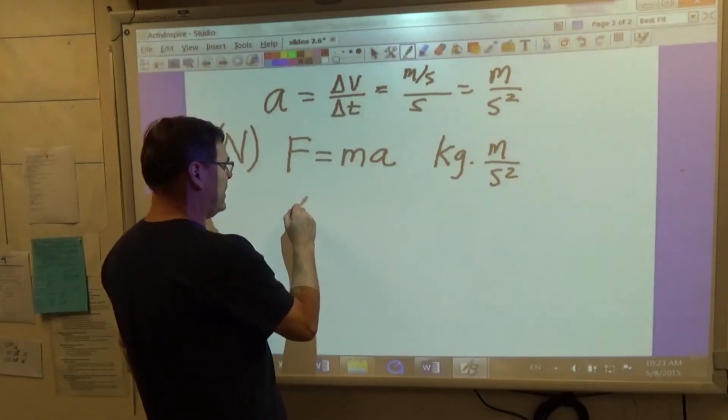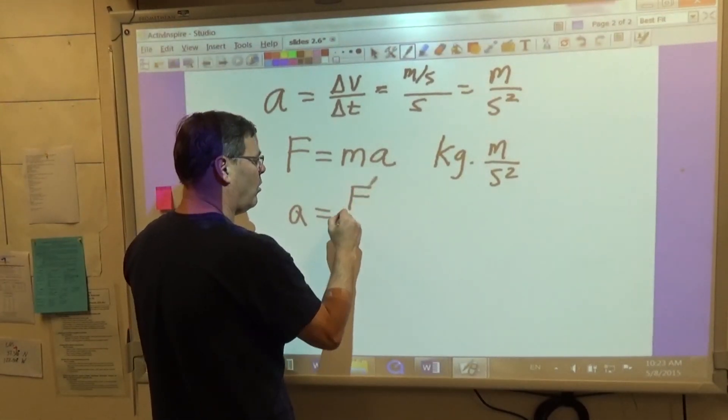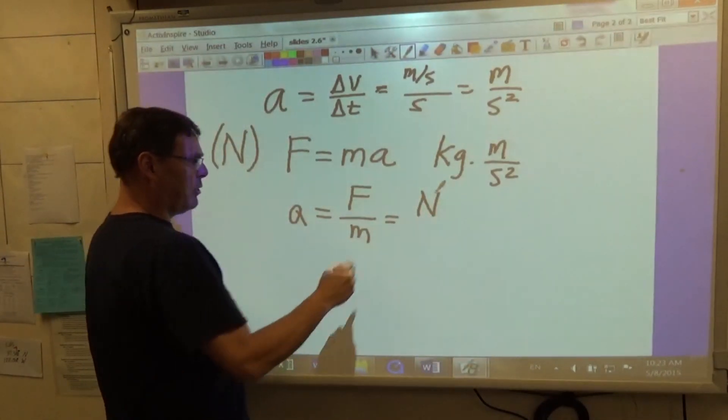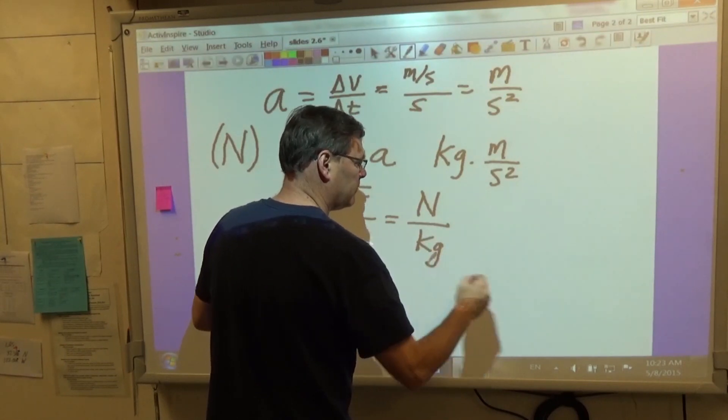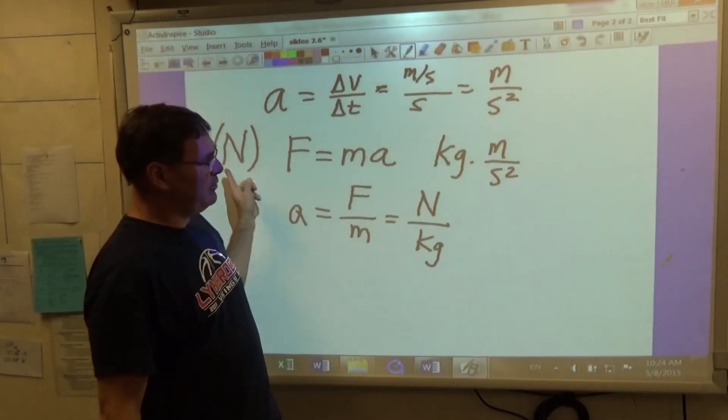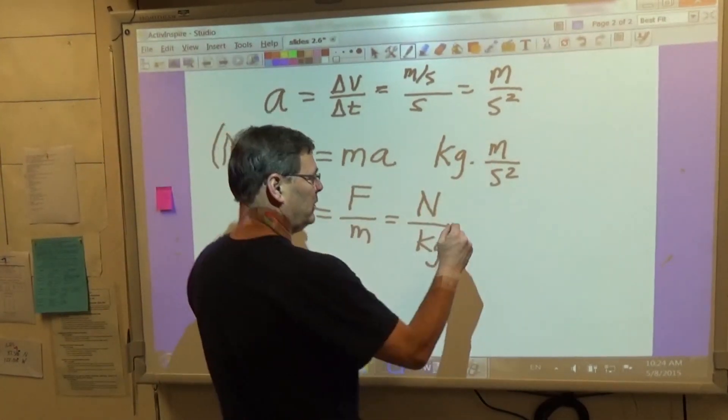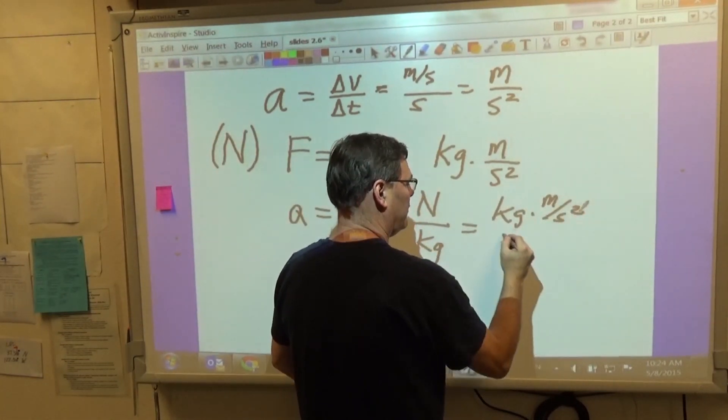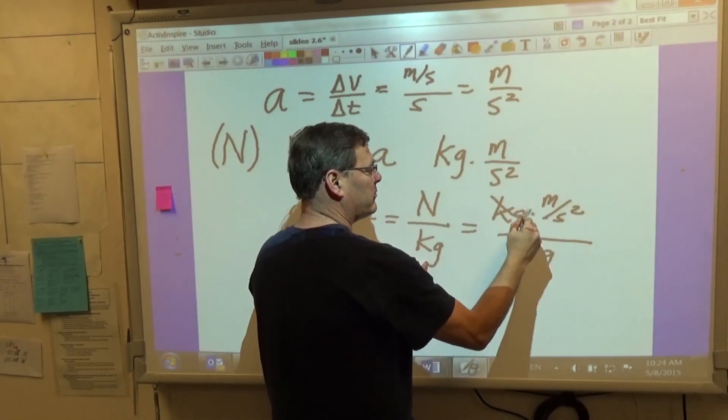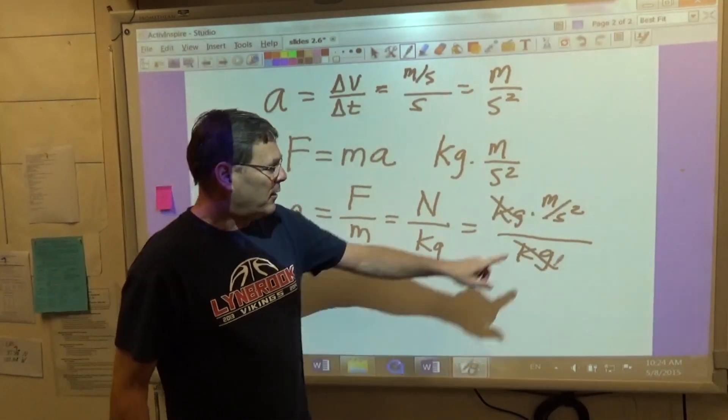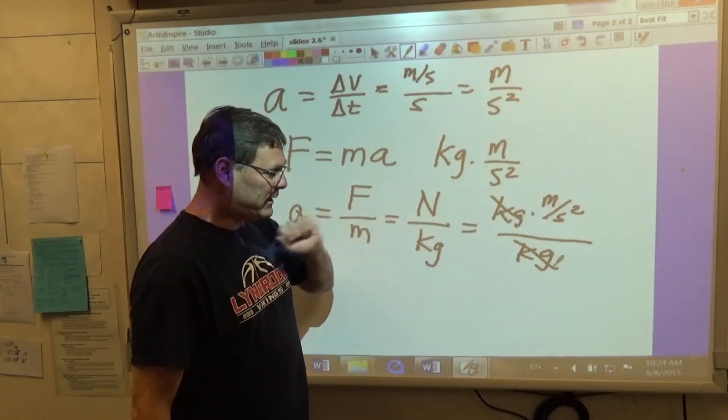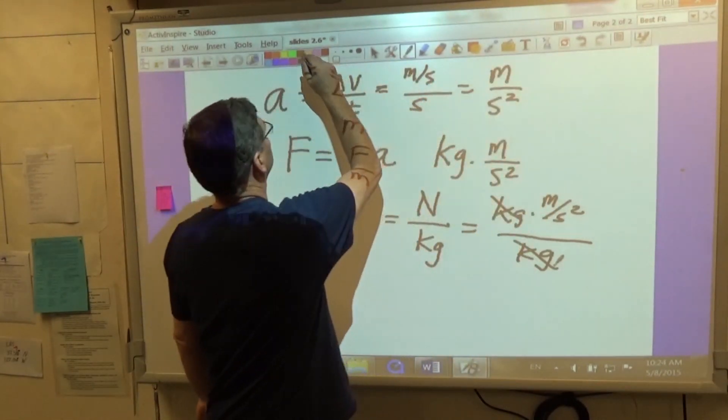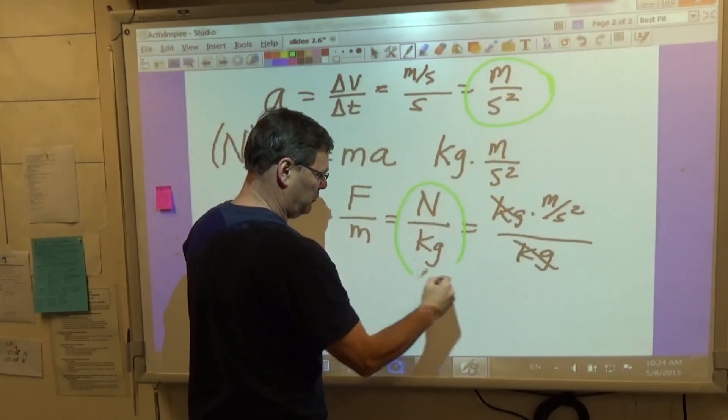If I rearrange this equation to say A is equal to F over M, then I have the units of force, newtons, per kilogram. And I see here that a newton is equal to a kilogram meter per second squared. So I can replace this with kilogram meter per second squared over kilograms. Those cross off. And I see that a meter per second squared is the same as a newton per kilogram. So we have two possible units for acceleration.